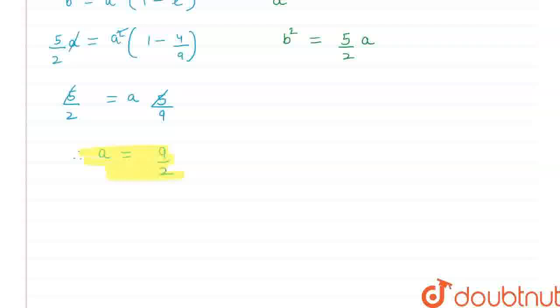Now I will put this value in my equation. Then I will get the value of my b. Therefore b square is equal to 5 upon 2 multiplied by 9 by 2. Therefore my b square is equal to 45 by 4.